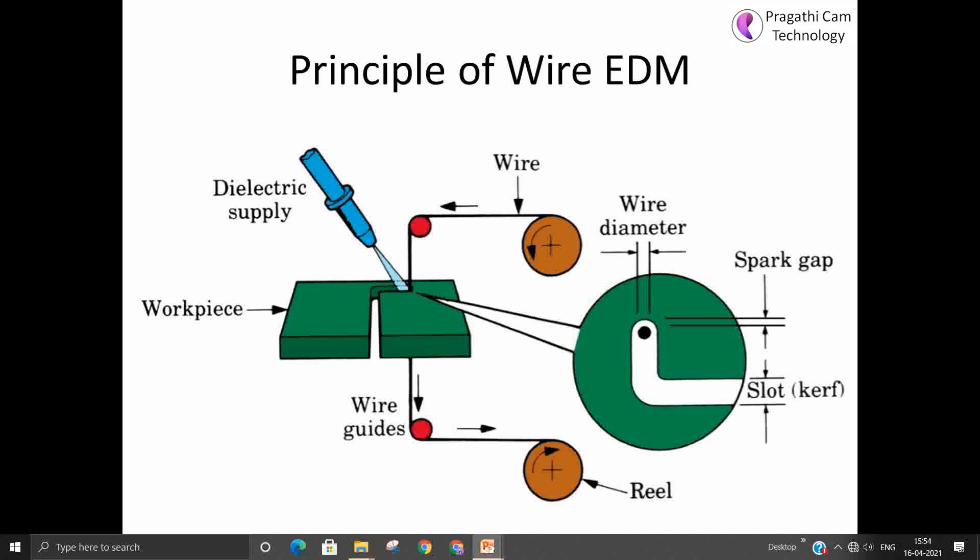Due to that, whatever material in front of the wire gets eroded. So here the workpiece also gets eroded and the tool also gets eroded. That is the reason the wire is continuously replaced by new wire.